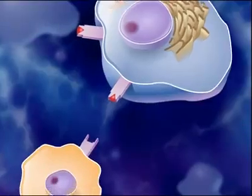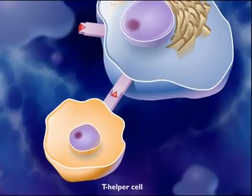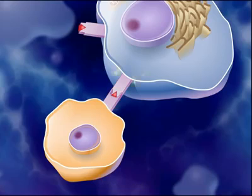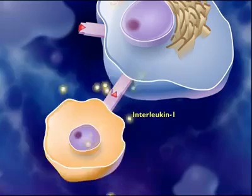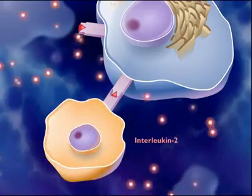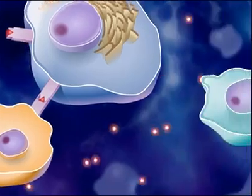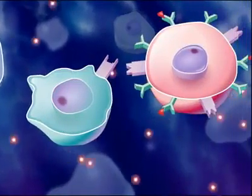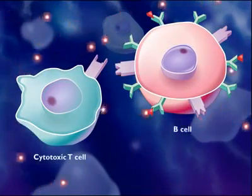An antigen-presenting macrophage interacts with a T-helper cell that can recognize the same antigen. During the interaction, the macrophage releases a chemical alarm signal called interleukin-1, which stimulates the T-helper cell to secrete interleukin-2. Interleukin-2 causes the proliferation of certain cytotoxic T-cells and B-cells.